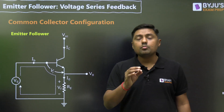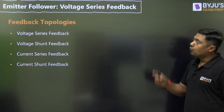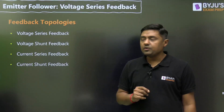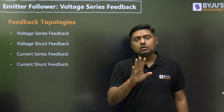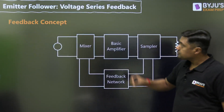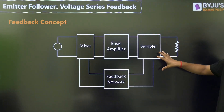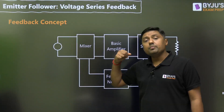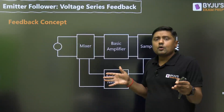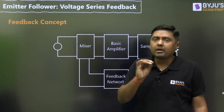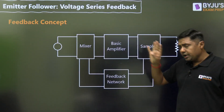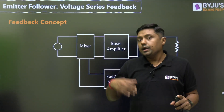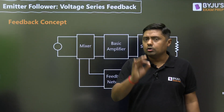I'm going to discuss a very important topic: the feedback mechanism in emitter follower, which is voltage series feedback. There are four types of feedback topologies: voltage series, voltage shunt, current series, and current shunt. At the output we use a sampler circuit to sample the signal — either voltage or current — and at the input we mix voltage or current, giving us four types of combinations and four types of basic amplifiers.